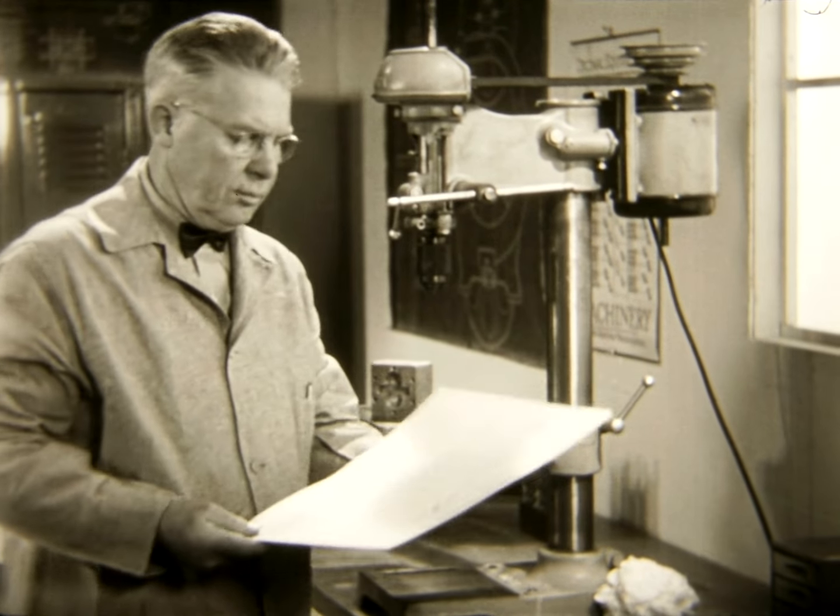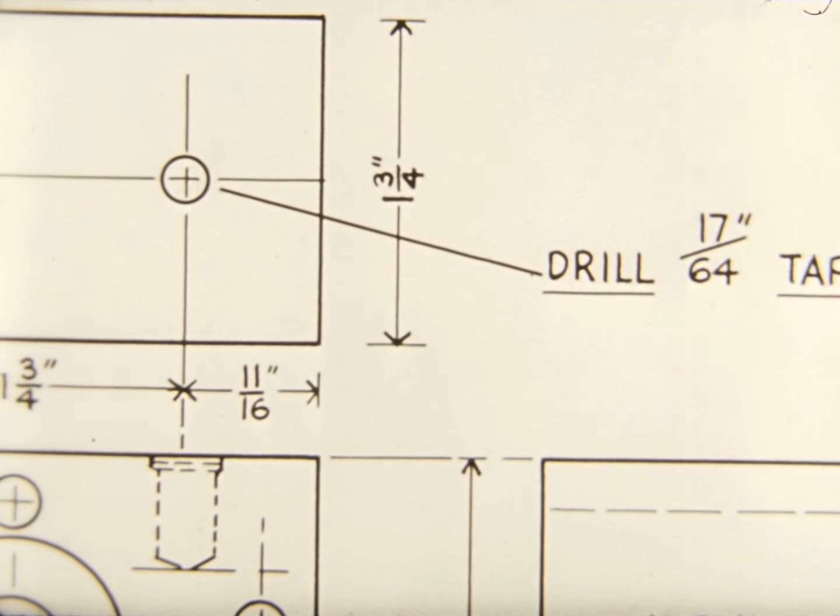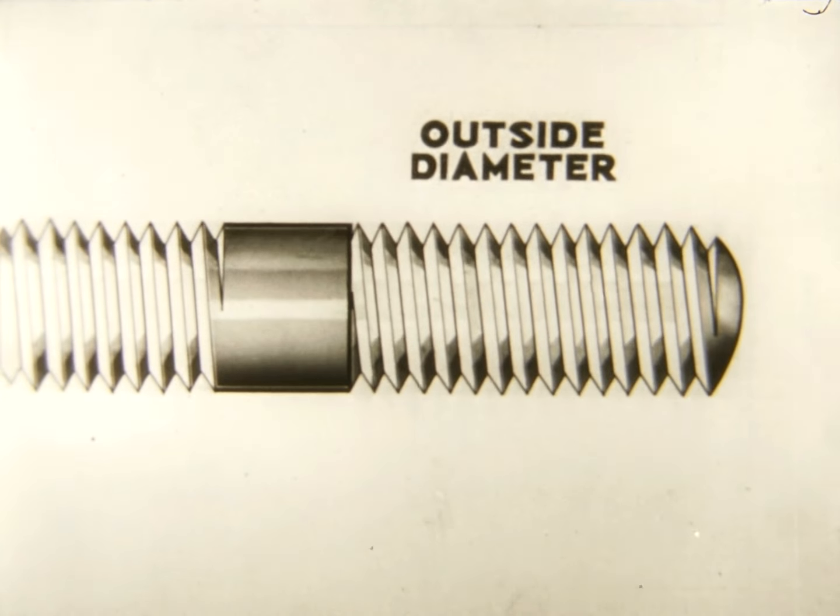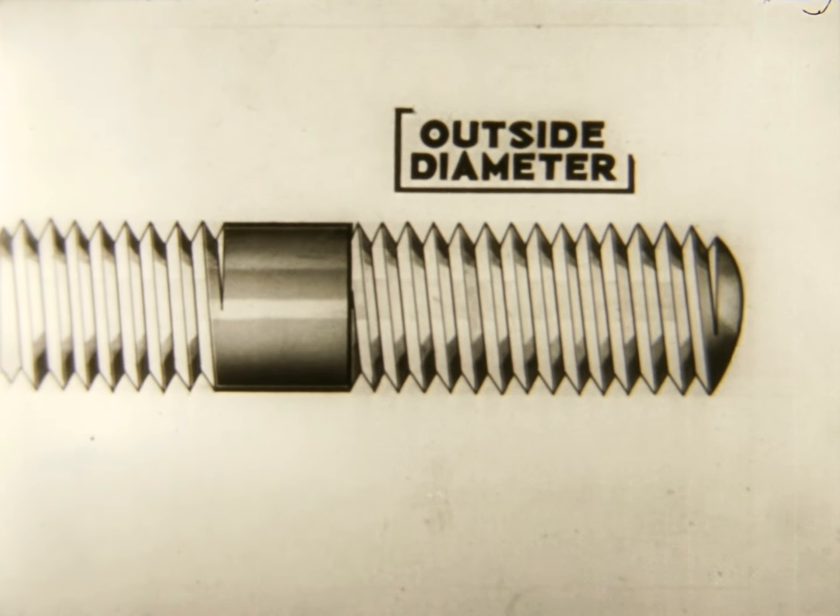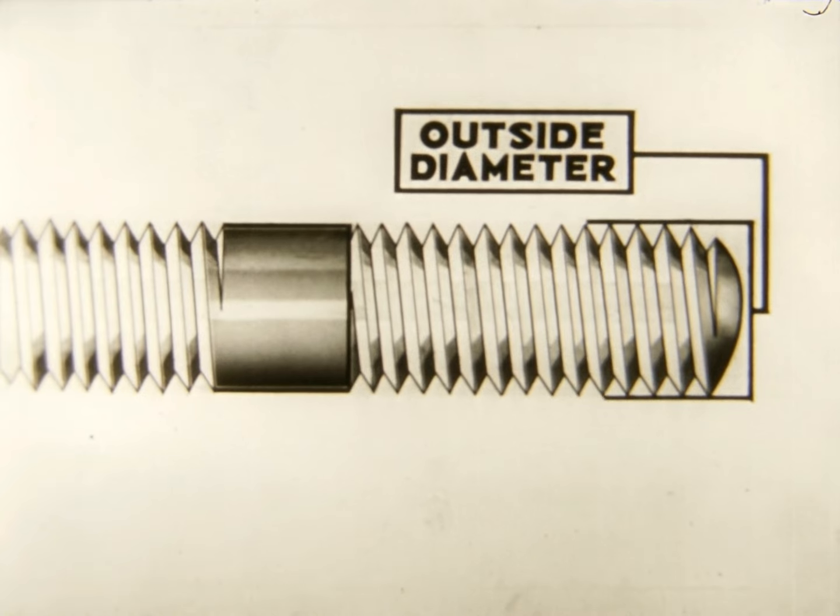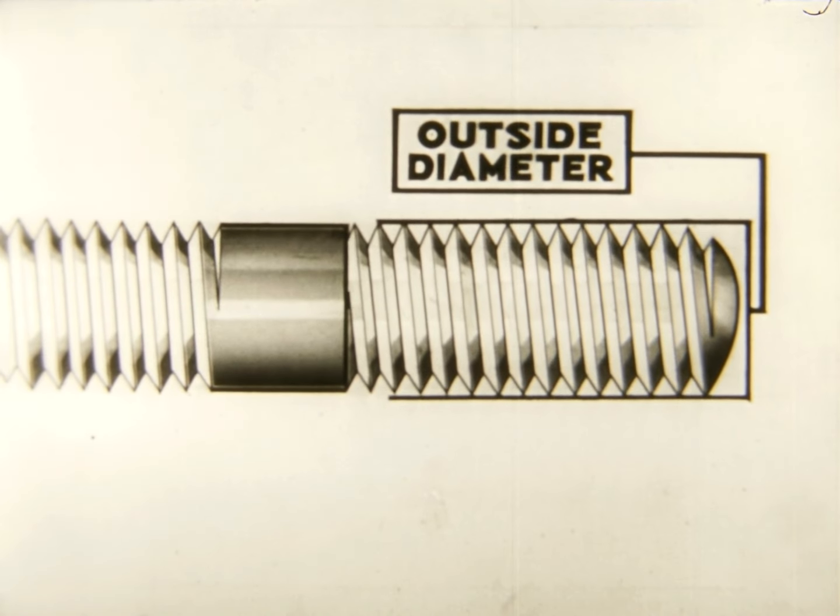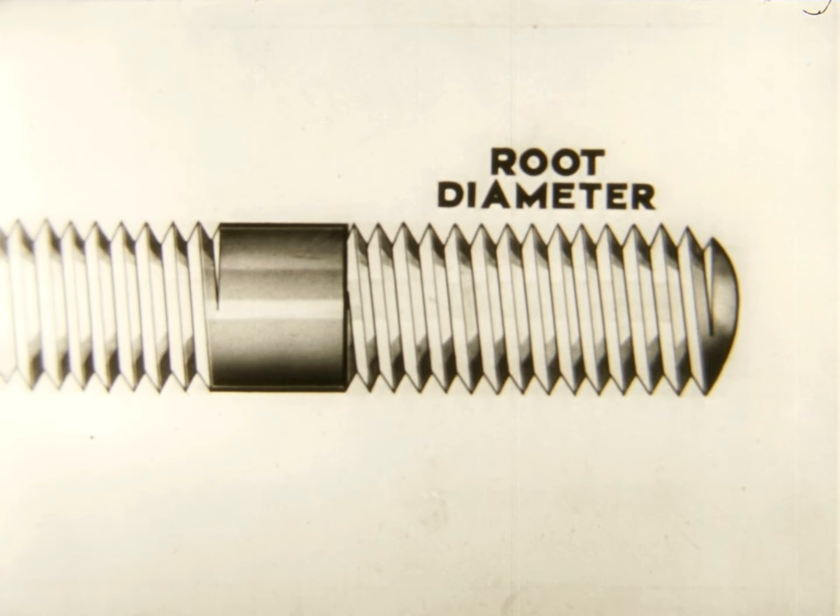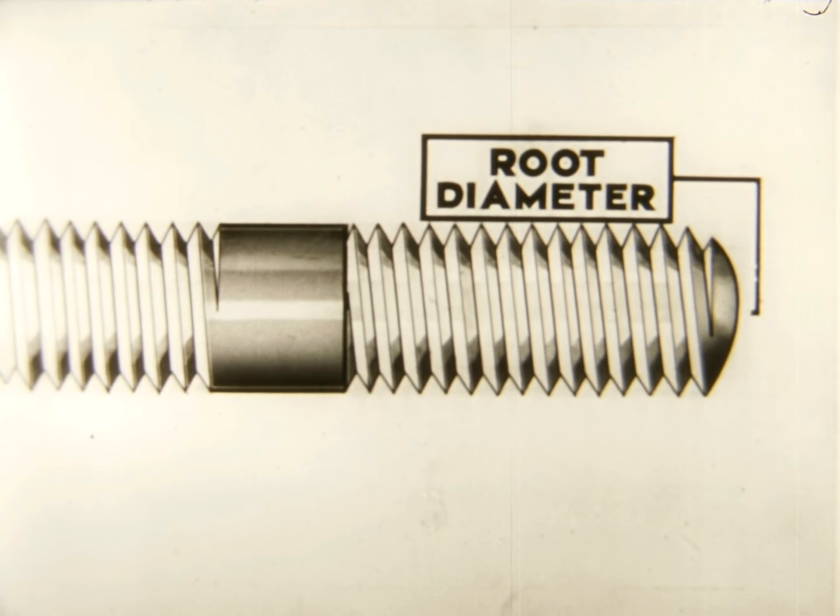The next step in tapping is drilling the hole. Be certain that the drill is the right size. The sizes of tap drills are calculated in terms of the outside or major diameter of a thread, and the inside, minor or root diameter of the thread.